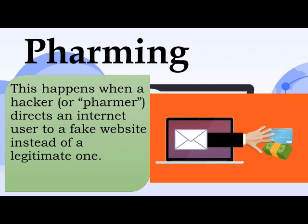Pharming happens when a hacker or farmer directs an internet user to a fake website instead of a legitimate one. These spoofed sites can capture a victim's confidential information including usernames, passwords, and credit card data, or install malware on their computer. Farmers usually focus on websites in the financial sector including banks, online payment platforms, or other e-commerce destinations.